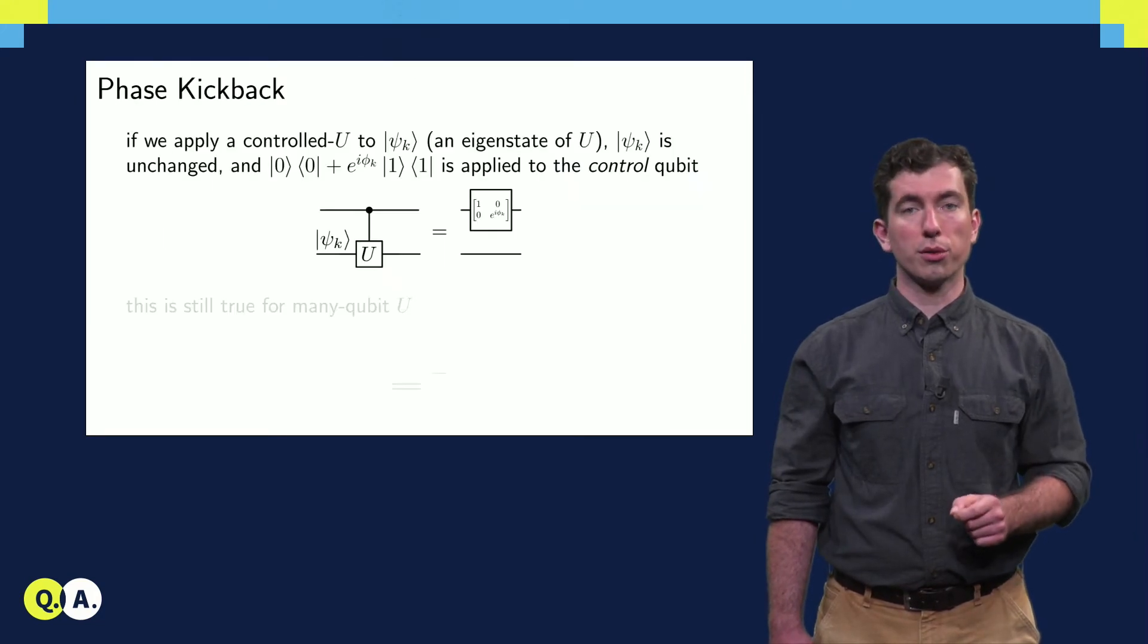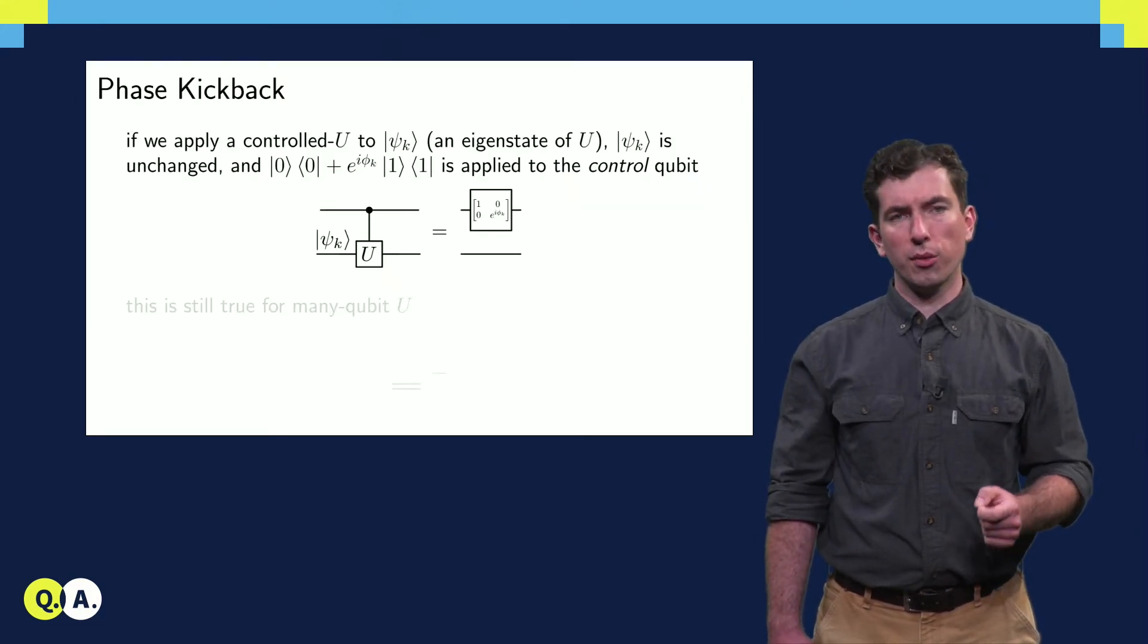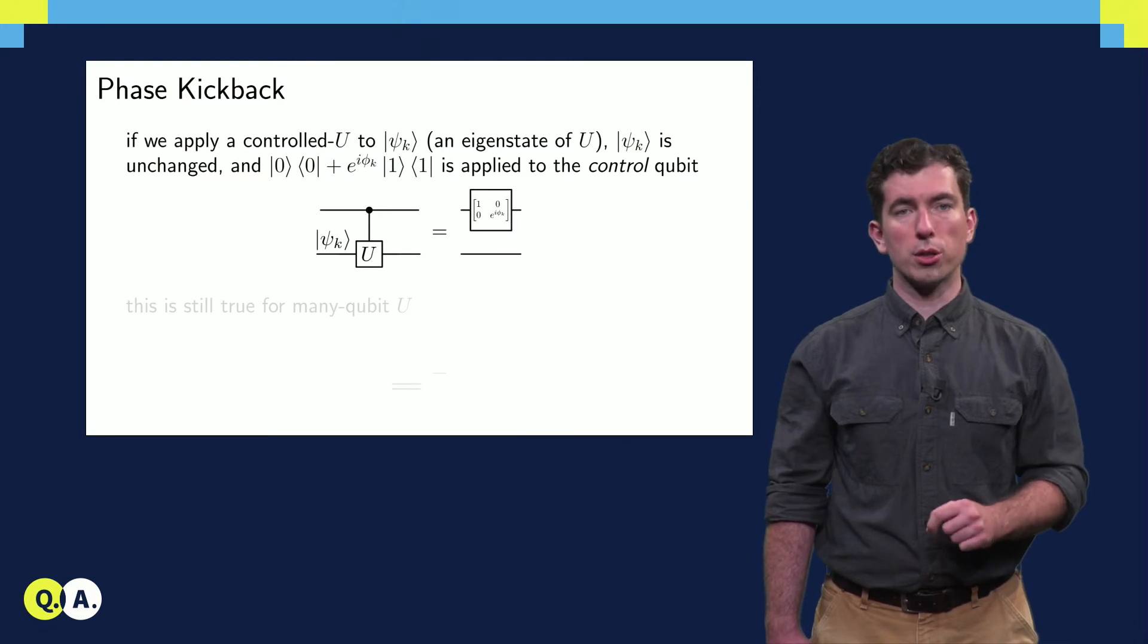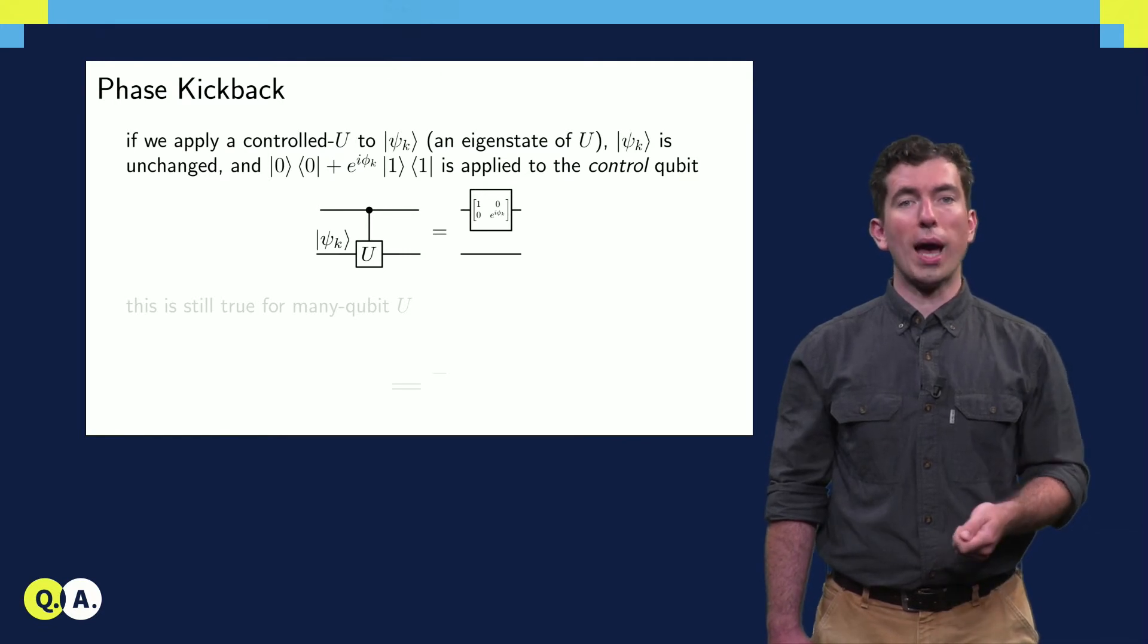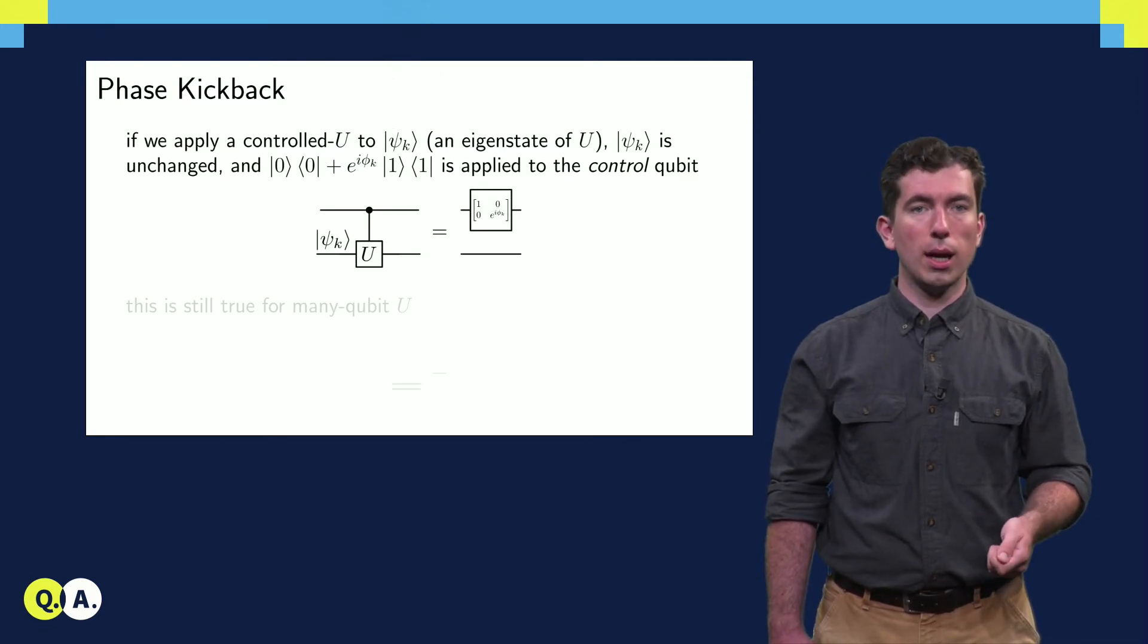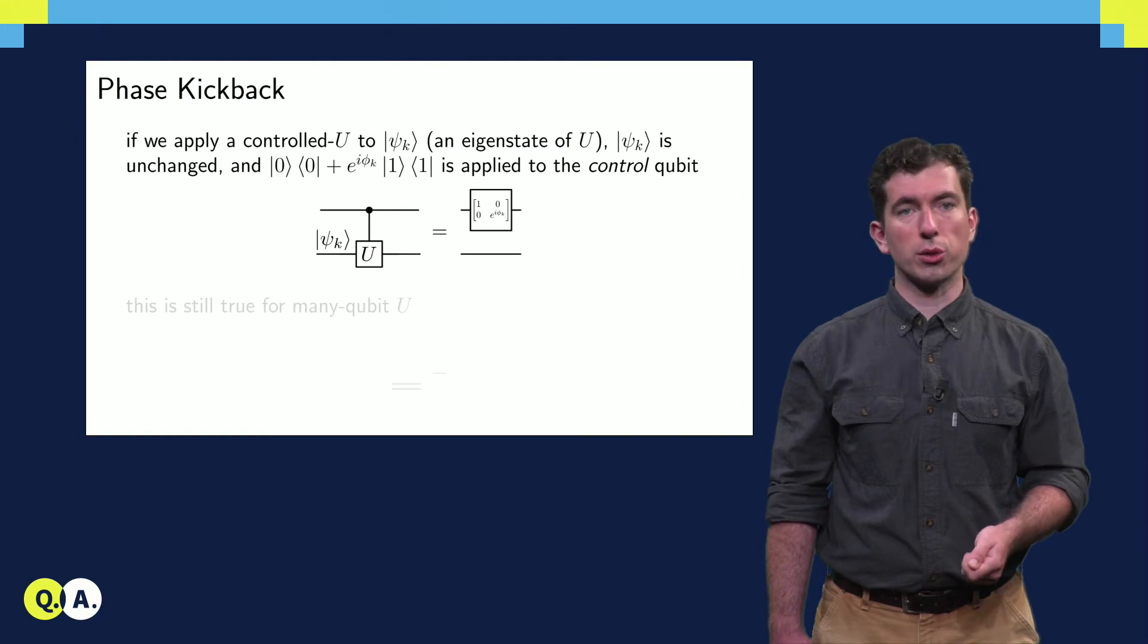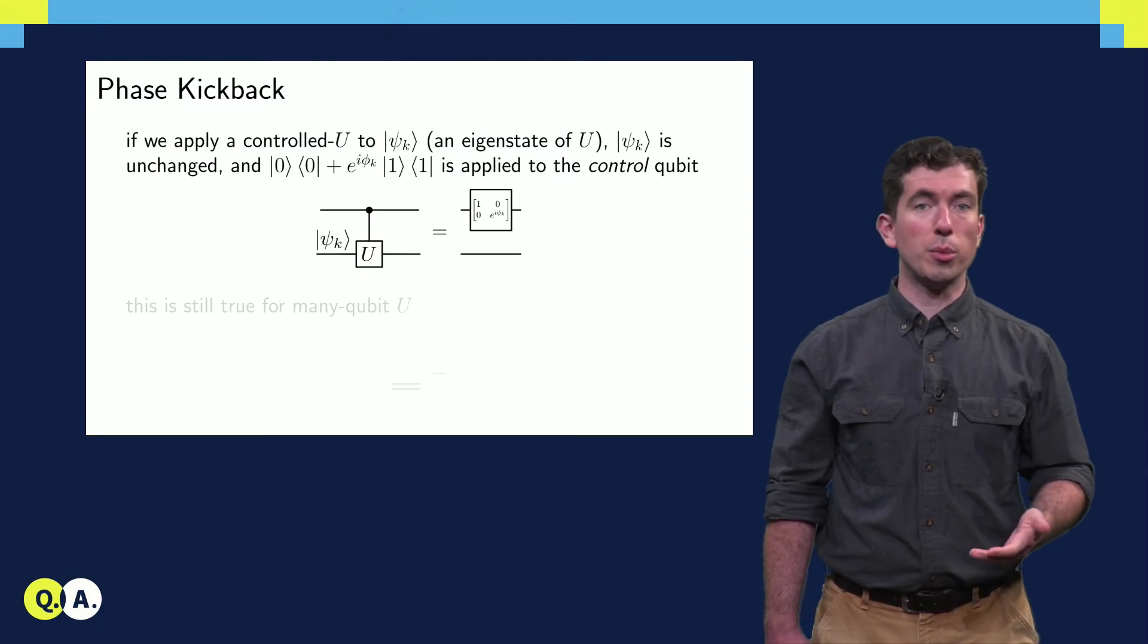This implies something called phase kickback. If we apply a controlled U operation to a register, where the target subsystem is prepared in an eigenstate of U, then U acts like the V alpha operator, and the corresponding phase is transferred to the control qubit, where it can then be read out in principle.